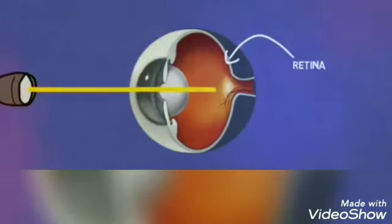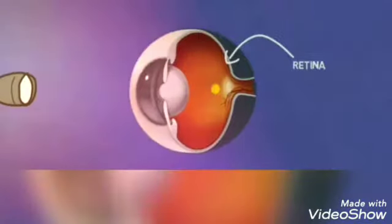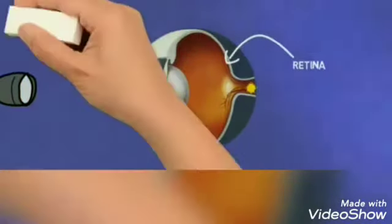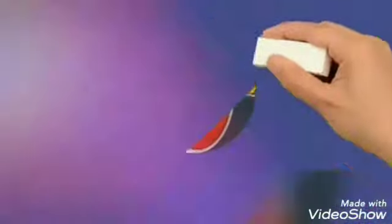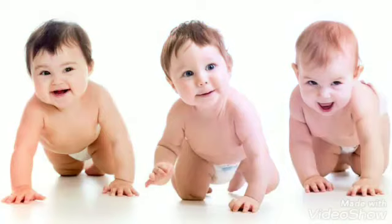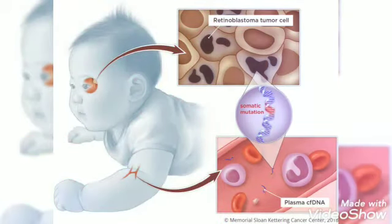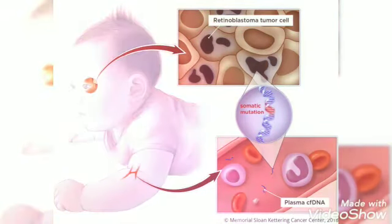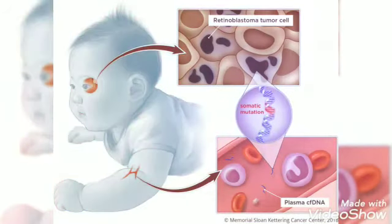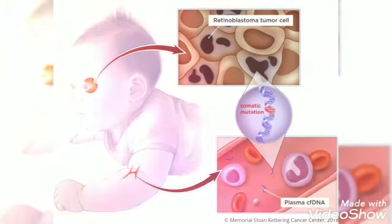The retina contains light-sensitive cells that send electrical nerve impulses from the optic nerve to the brain. Retinoblastoma commonly affects children, and it can be heritable or non-heritable. If we talk about heritable retinoblastoma, it is autosomal dominant.